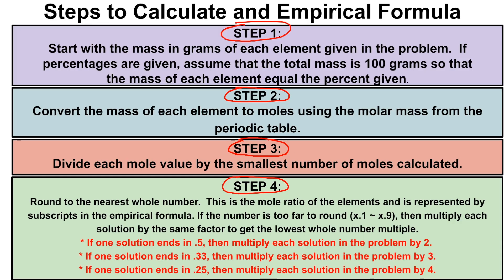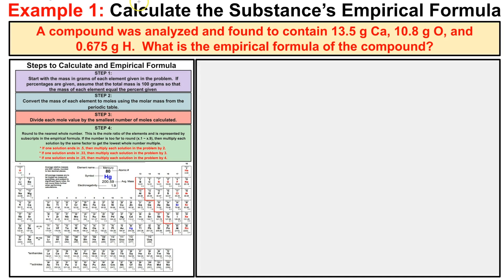Let's jump right into example problem number one. A compound was analyzed and found to contain 13.5 grams of calcium, 10.8 grams of oxygen, and 0.675 grams of hydrogen. What is the empirical formula for this compound? We know the masses of each element and we have to determine the empirical formula.